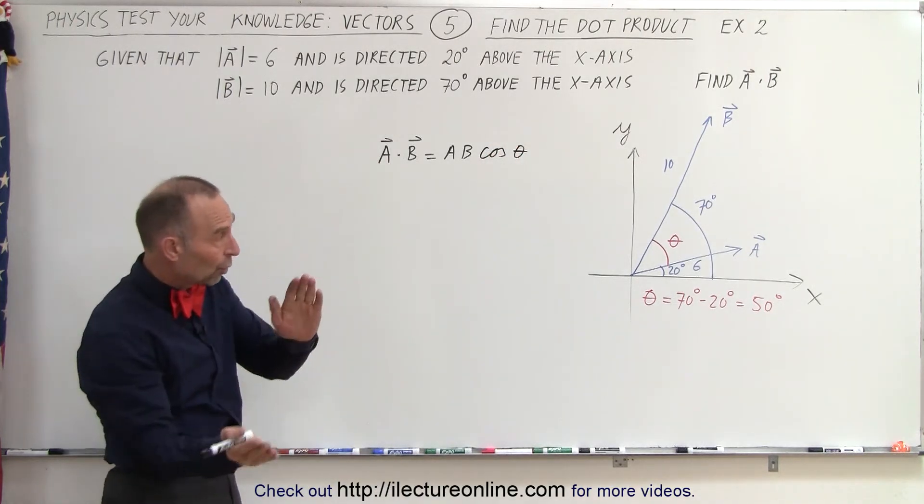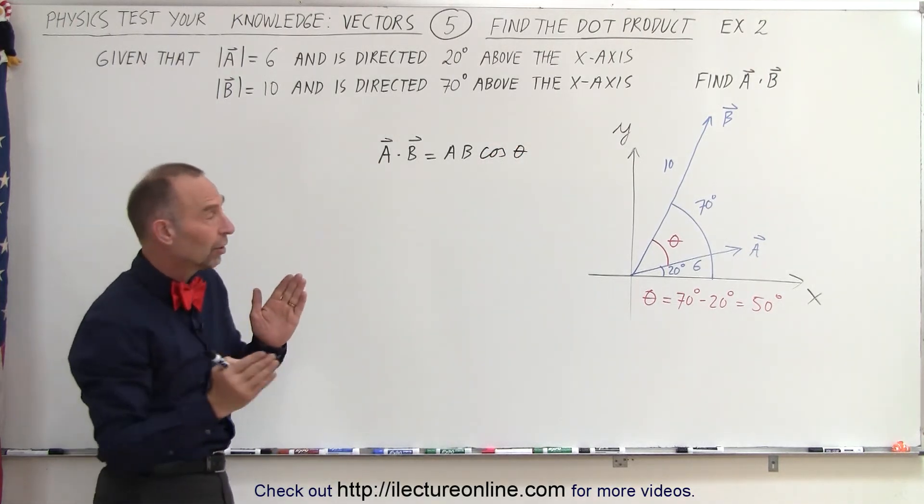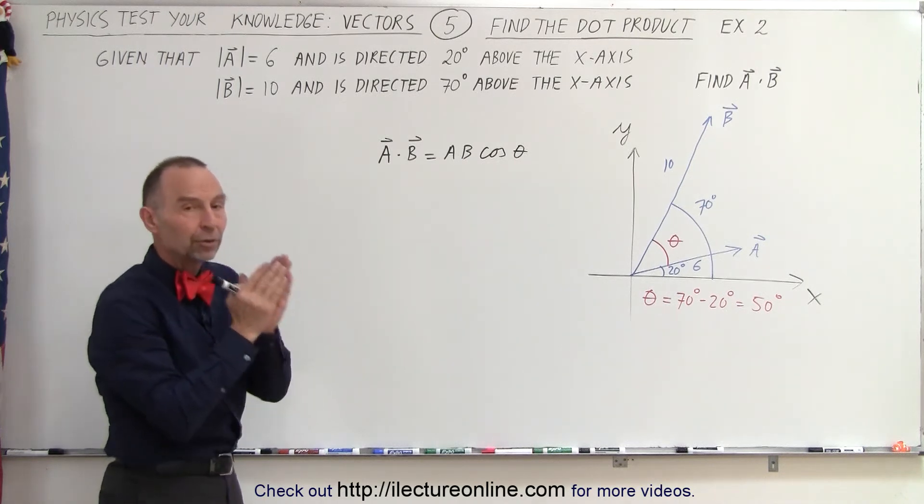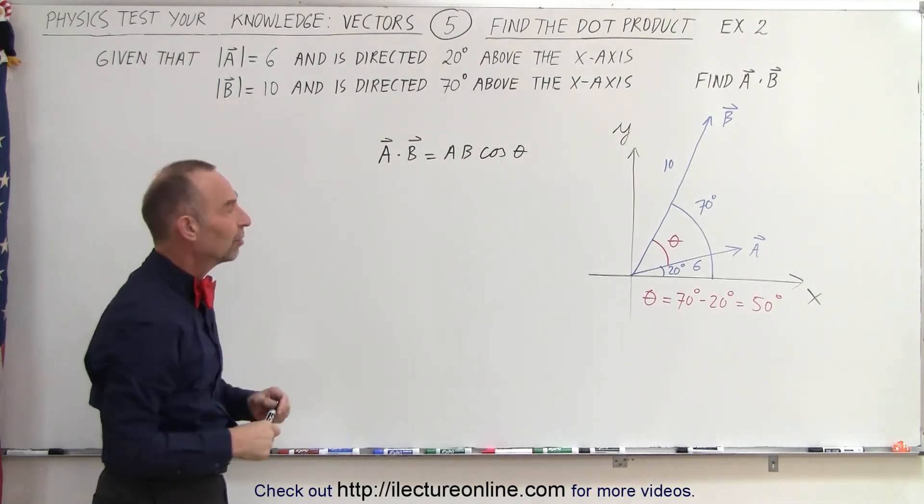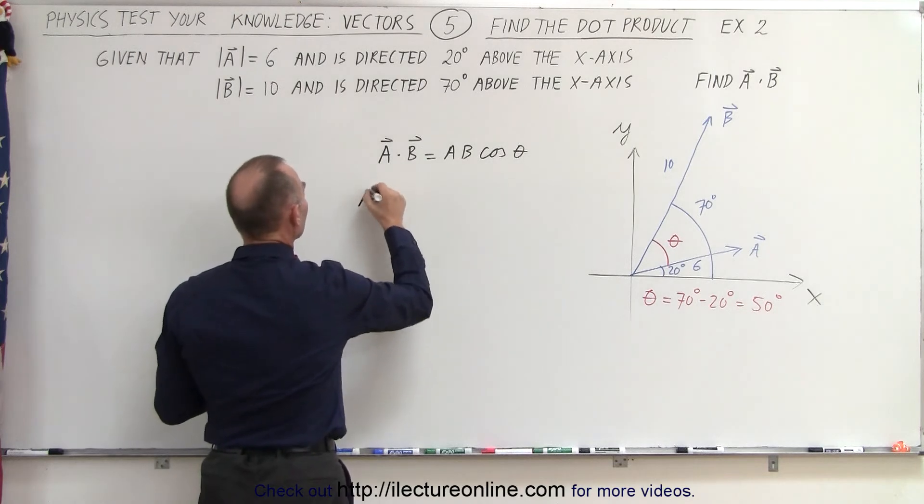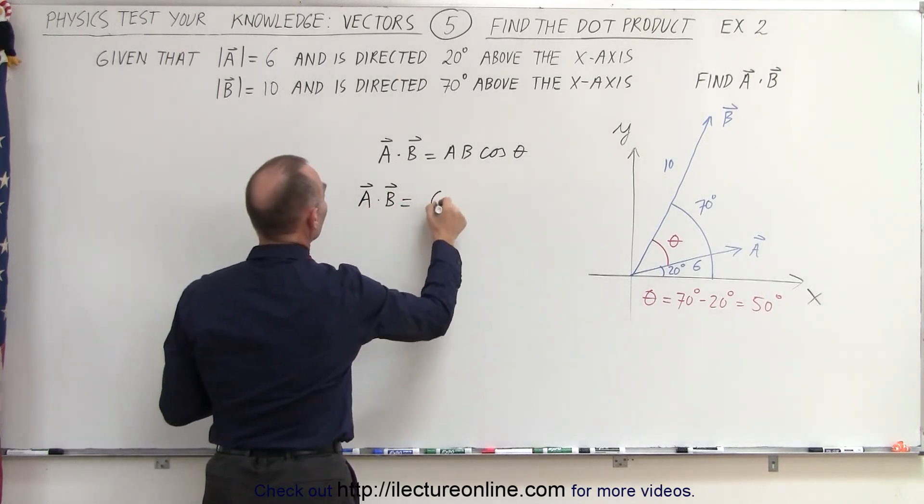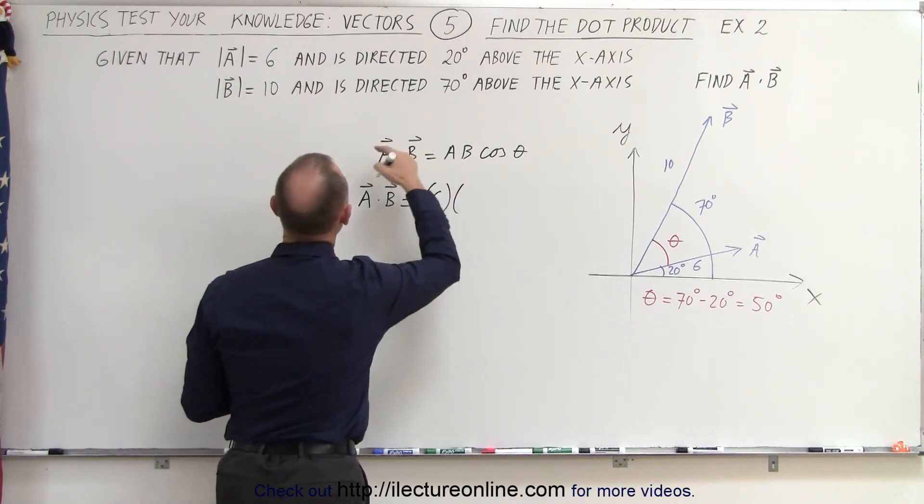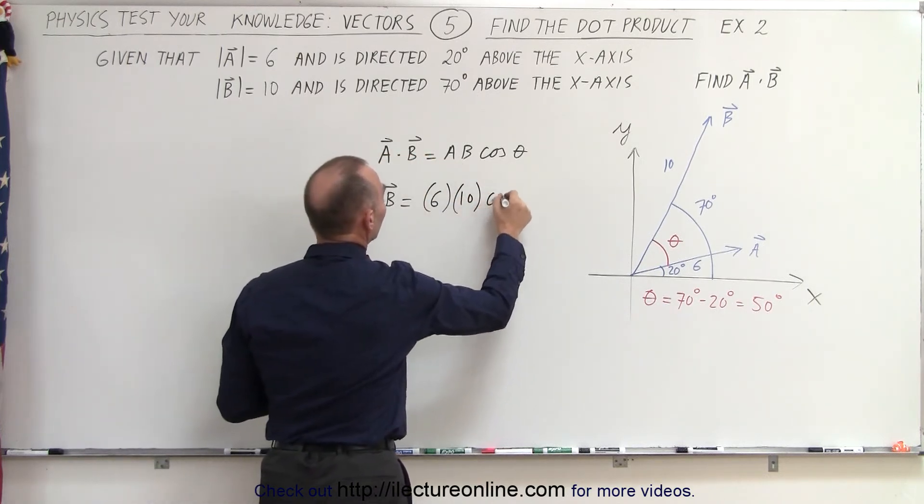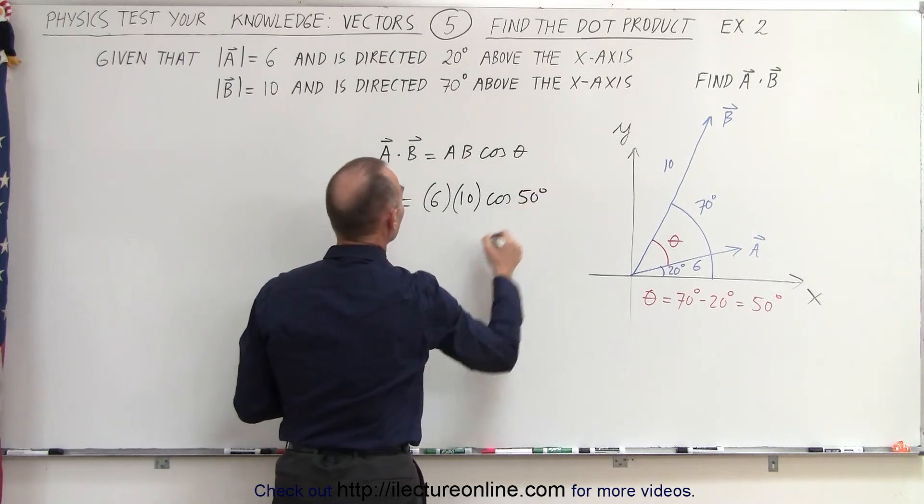So really it doesn't matter which way the vectors are oriented as long as we can find the angle between the two vectors, which in this case is 50 degrees. That means that the dot product A dot B is equal to the magnitude of A, which is 6, times the magnitude of B, which is 10, times the cosine of the angle between them, which is 50 degrees.